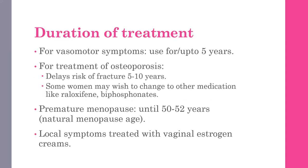Duration of treatment depends on various factors. For vasomotor symptoms, use HRT for up to five years — this applies whether the diagnosis is primary ovarian insufficiency, premature menopause, or menopause itself. For osteoporosis, HRT delays fracture risk by five to ten years; some women may wish to change to other medications like raloxifene or bisphosphonates because of HRT-related risks. If the patient has premature menopause at 40-45 years, treatment is warranted until the age of 50 to 52 years.